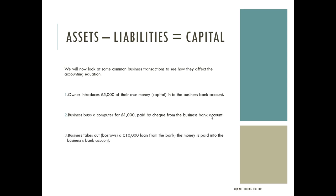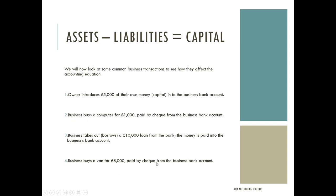Transaction three: the business takes out a £10,000 loan from the bank, with the money paid into the business bank account. The two accounts affected are the bank account, which increases by £10,000, and the loan liability, which is now owed to the bank. Transaction four: the business buys a van for £8,000, paid by cheque from the business bank account. The van account increases by £8,000, but £8,000 is lost from the bank account.